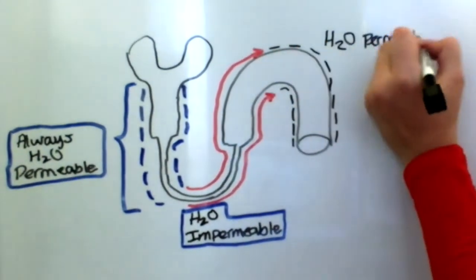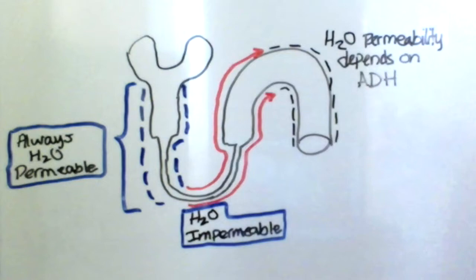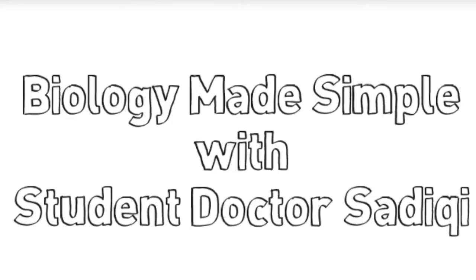And the remaining portion of the nephron, the permeability depends upon antidiuretic hormone which we will discuss in the next video and the regulation of blood pressure by the renal system.